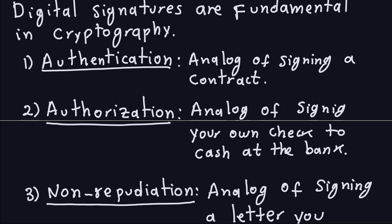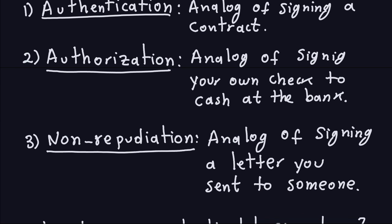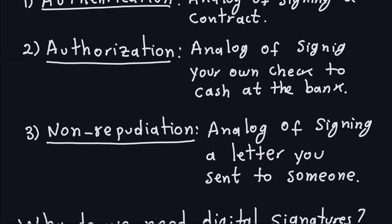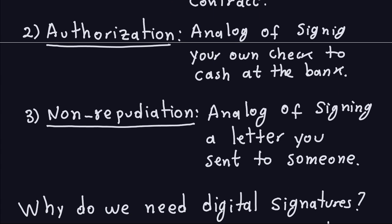The second reason is authorization, which is the analog of signing your checks to cash at the bank — when you sign your check, it proves that it's actually you who went there to cash it. Probably the most important one for cryptography is non-repudiation. This is an analog of signing a letter you sent to someone — non-repudiation means that you cannot deny, up to a certain point, that you were the one who sent that message. This is very important in cryptography because it prevents people from cheating.